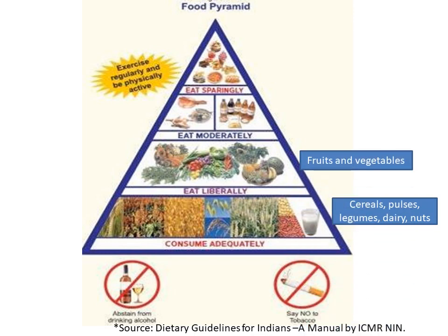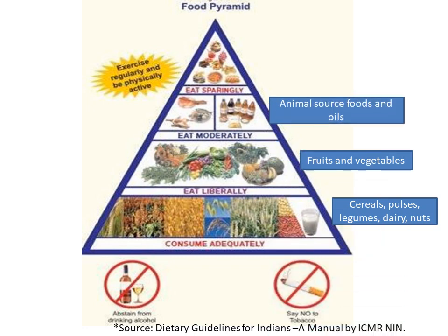Foods shown in the second band indicate 'eat liberally.' Fruits and vegetables should be eaten liberally as they are good sources of fiber, vitamins, minerals and phytochemicals which are essential for good health. As they are rich in color, texture, shapes and sizes, they bring variety to the diet. Foods represented in the third band are animal source foods and oils, indicated by 'eat moderately.'